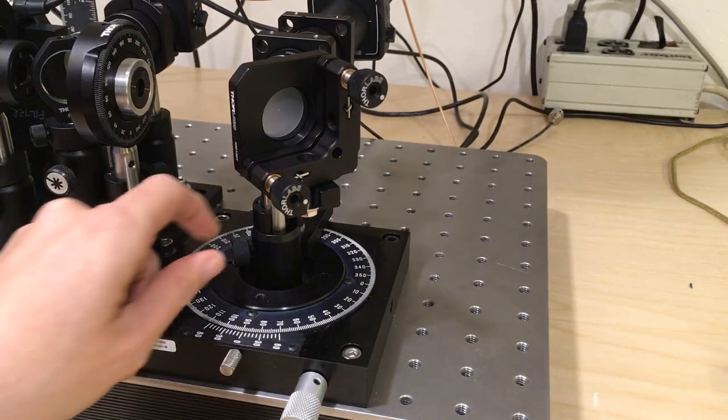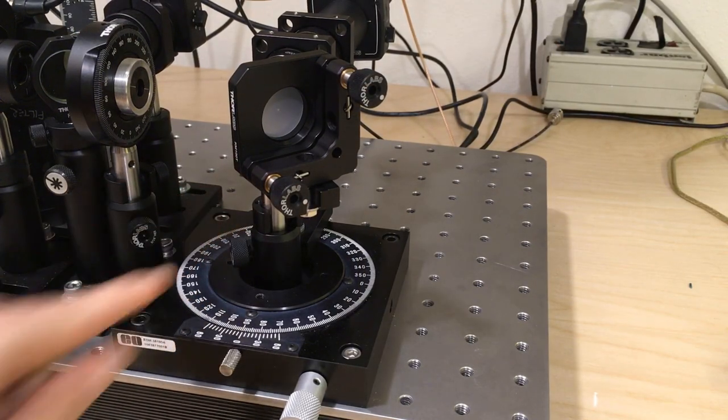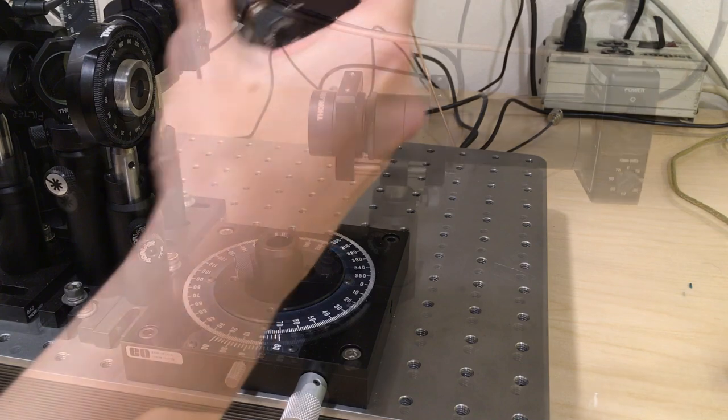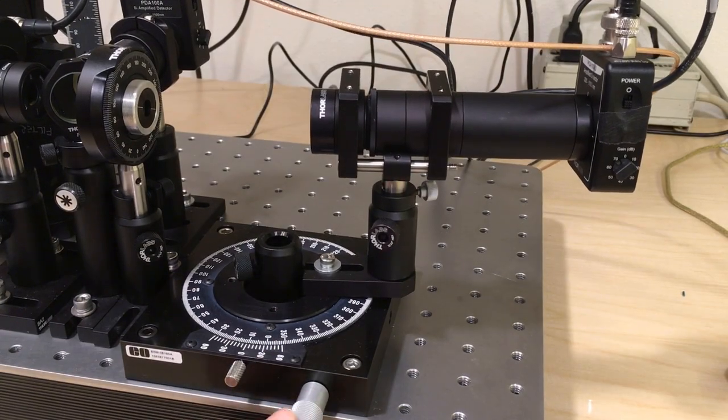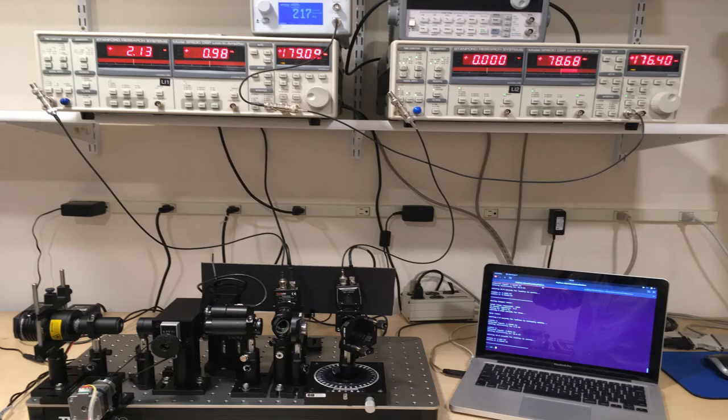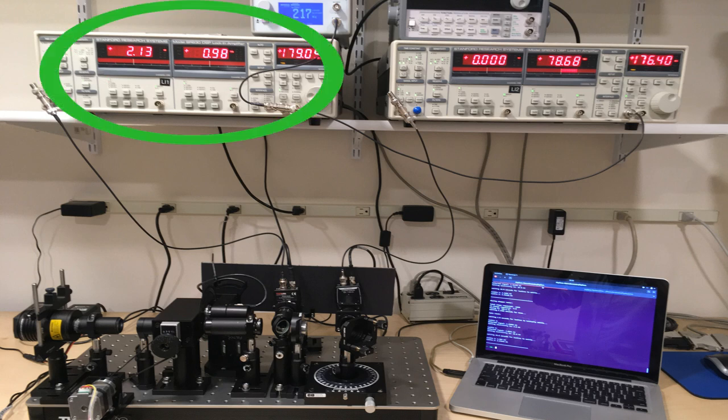The test mirror is held on a kinematic mount. The focusing lens and detector rotate about the test mirror. The angle of incidence is read off using a vernier dial. The signal and reference photodiode voltages are measured using two lock-in amplifiers.